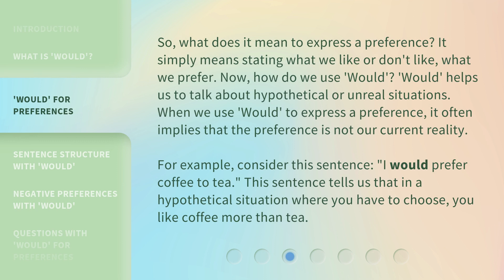So, what does it mean to express a preference? It simply means stating what we like or don't like — what we prefer. 'Would' helps us to talk about hypothetical or unreal situations. When we use 'would' to express a preference, it often implies that the preference is not our current reality. For example, consider this sentence: 'I would prefer coffee to tea.' This sentence tells us that in a hypothetical situation where you have to choose, you like coffee more than tea.